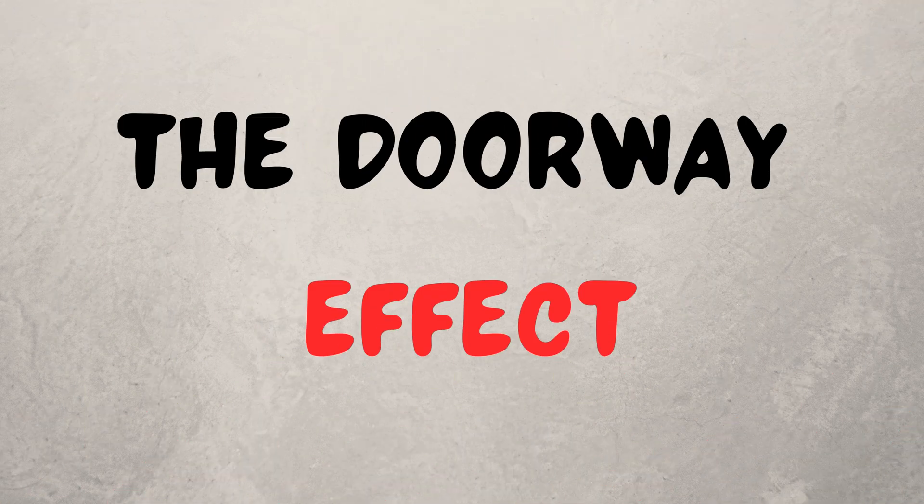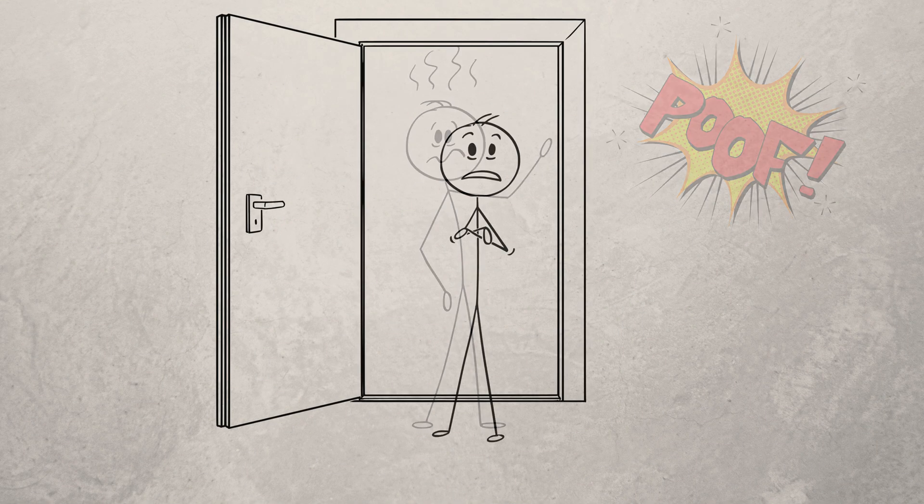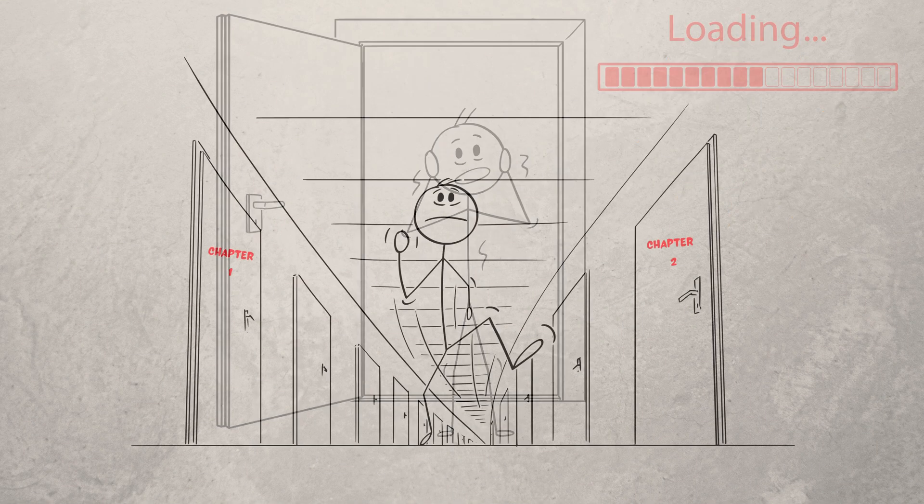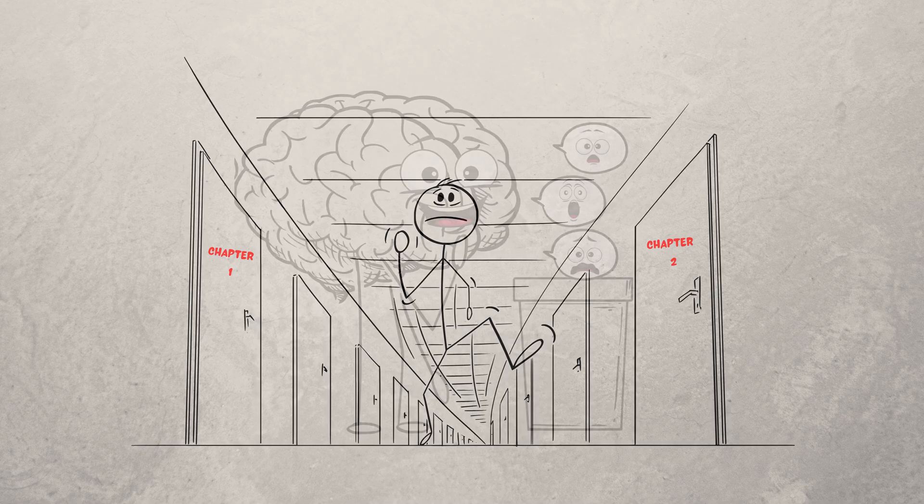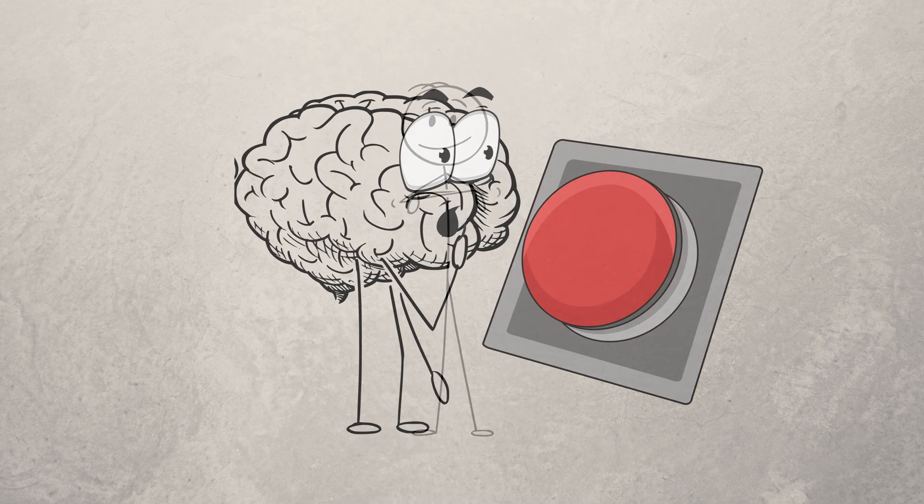One, the doorway effect. You walk into a room and poof. Your brain dumps your train of thought. It sees each room as a new chapter and tosses out info it thinks is old news. Way to hit the mental eject button, brain.